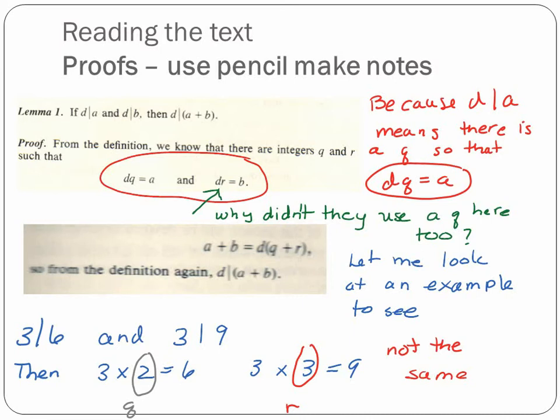So this is how I read the proofs in the book. I look at line by line and I try to figure out why they put different things here. So the first thing is they use the definition of d divides a. d divides a means there's an integer such that d times the integer is equal to a. My first flag is they did the same thing for b, but they didn't use the same letter. So I have a q here and I have a q there. I don't have a q there. So why did that happen?